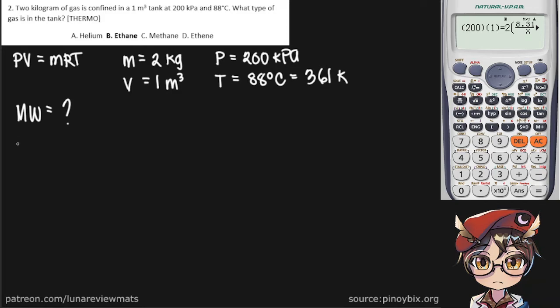If you remember, our specific gas constant equals the universal gas constant divided by the molecular weight times the absolute temperature.